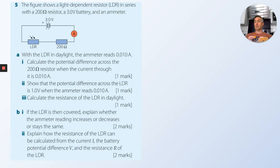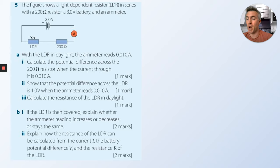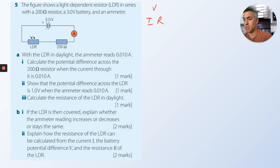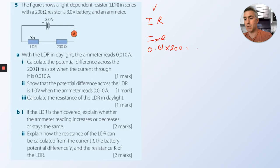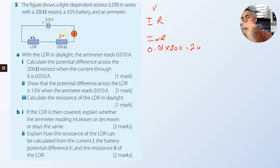The figure shows a light dependent resistor in series with a 200 ohm resistor and a 3 volt battery, and an ammeter. With the LDR in daylight the ammeter reads 0.01 amps. Calculate the potential difference across the 200 ohm resistor: V = I × R, so 0.01 times 200 equals 2 volts.